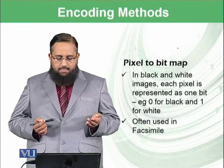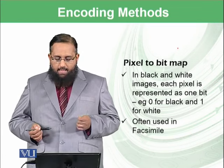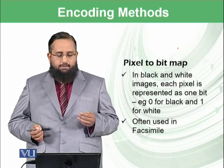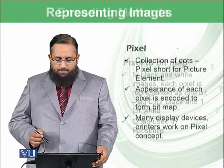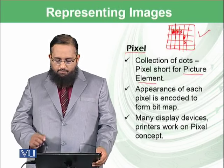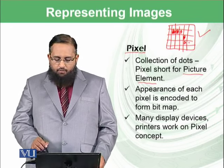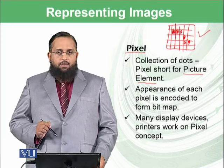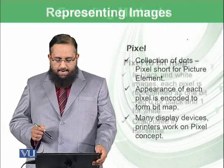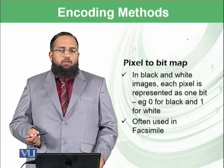Pixels are converted to a bitmap. In black and white images, each pixel is represented as one bit. To display a black and white bitmap, you just need one bit for each pixel — if it is black, you save one against it, and if it is white, you store zero for it.